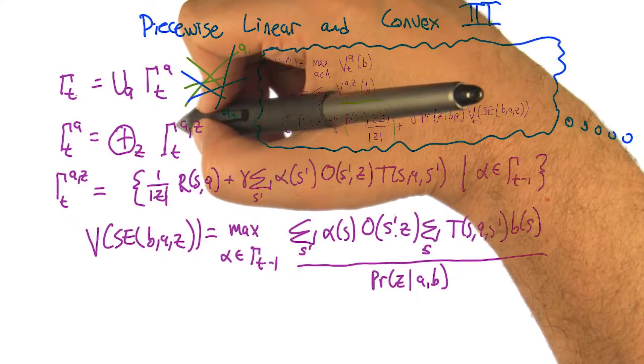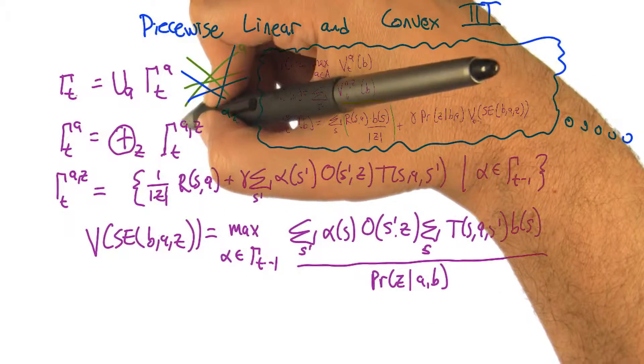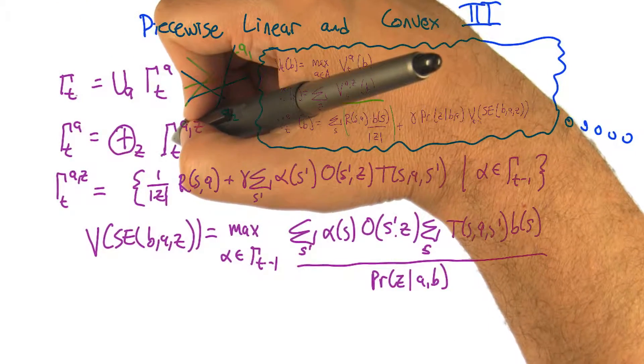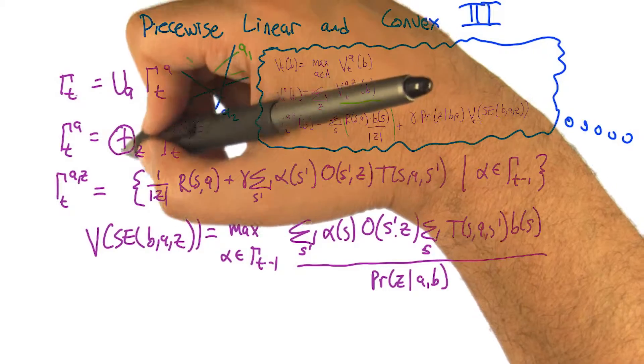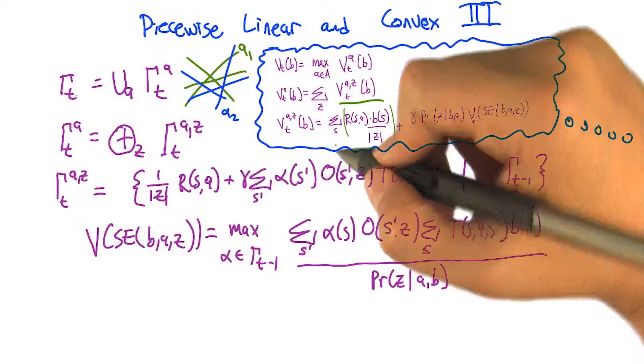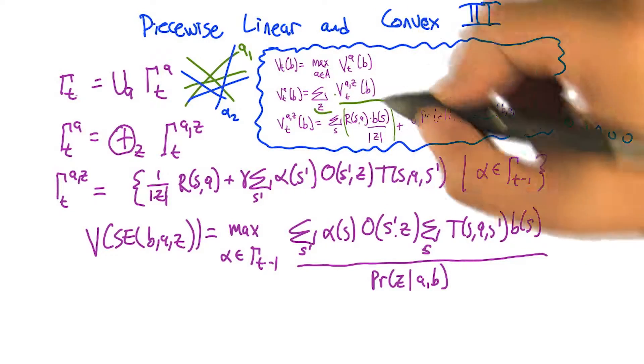So what we're doing here is now given a set of vectors, one set for each action observation pair. We're going to create a bag of vectors just for an action by taking this sort of cross sum, summing out all the different observations, because that's really what we're doing. We're summing out over the observations.